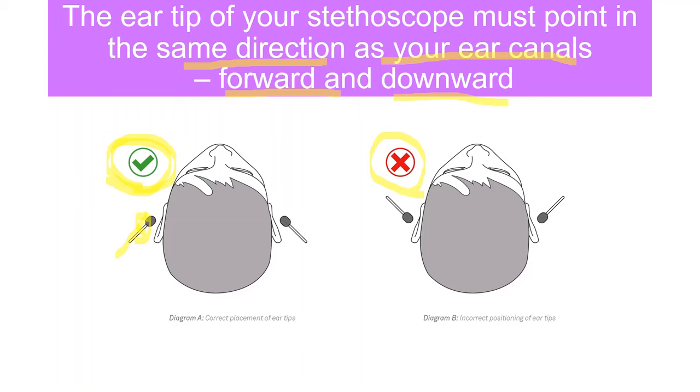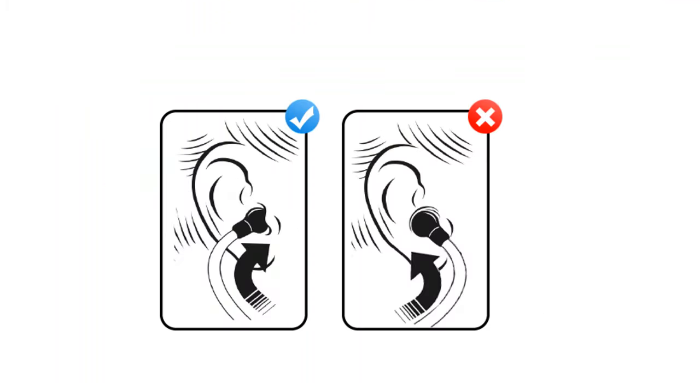That way you can better appreciate the sounds. If the eartip is placed incorrectly, it will be against the back of the external ear canals, which will affect the sound quality. Always wear it the right way with the eartip pointing forwards and downwards, same as the ear canals.